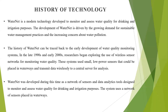History of Technology. WaterNet is a modern technology developed to monitor and assess water quality for drinking and irrigation purposes. Its development is driven by the growing demand for sustainable water management practices and increasing concern about water pollution. The history of WaterNet can be traced back to the early development of water quality monitoring systems. In the late 1990s and early 2000s, researchers began exploring the use of wireless sensor networks for monitoring water quality. WaterNet was developed during this time as a network of sensors and data analytics tools designed to monitor and assess water quality for drinking and irrigation purposes.